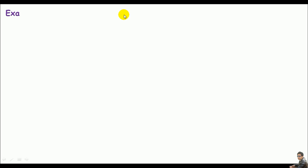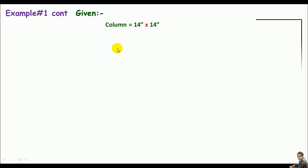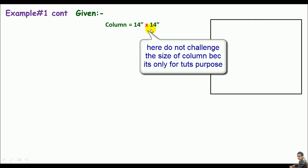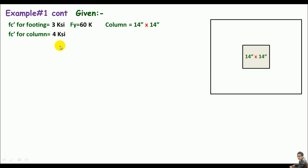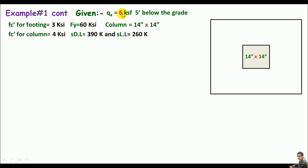According to the given data, we have the column size 14×14 inches, Fc prime for footing = 3 ksi, Fc prime for column, Fy, service dead and live loads, and allowable bearing capacity of 6 ksf at 5 feet below grade. The data is quite enough to design this footing, so let's go straight to the design solution.